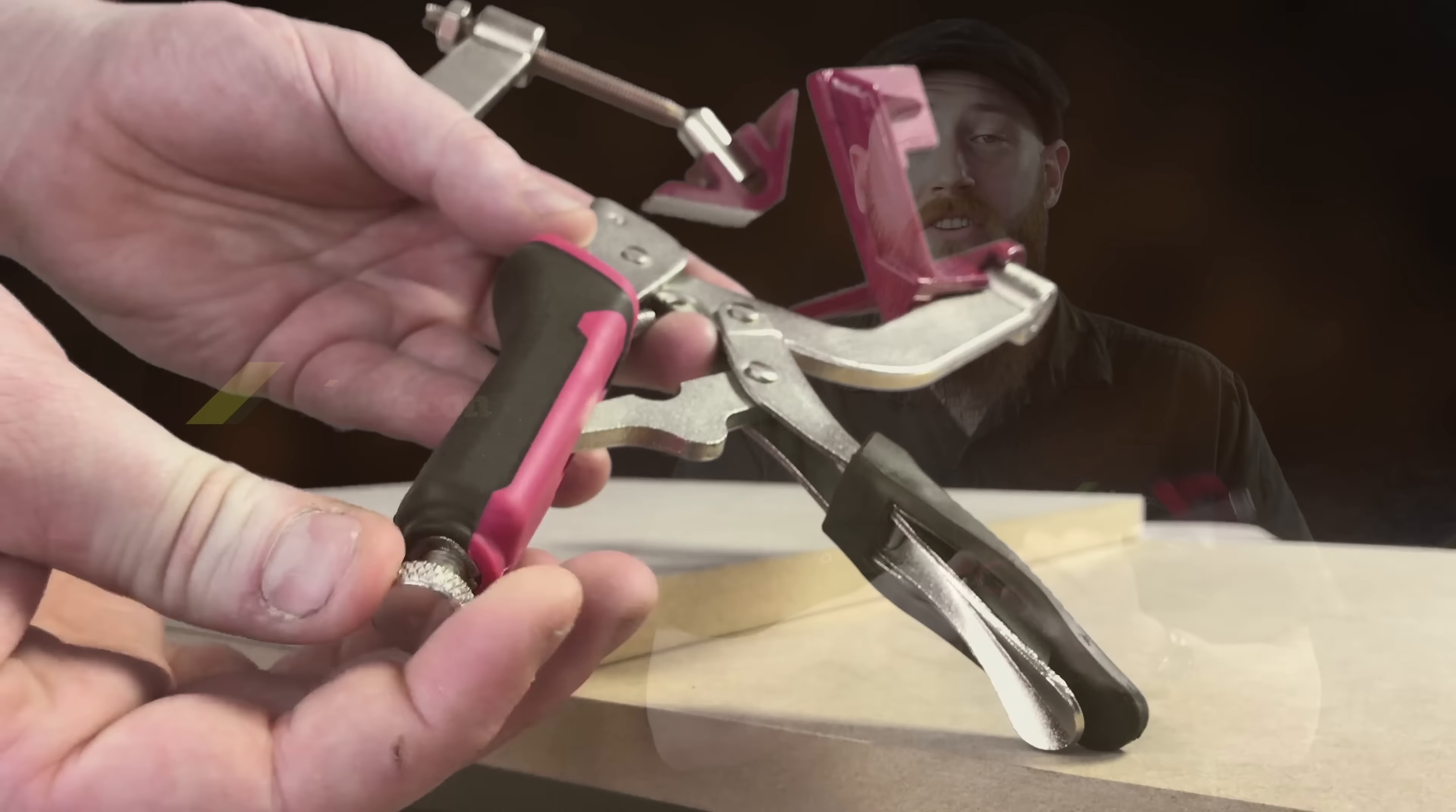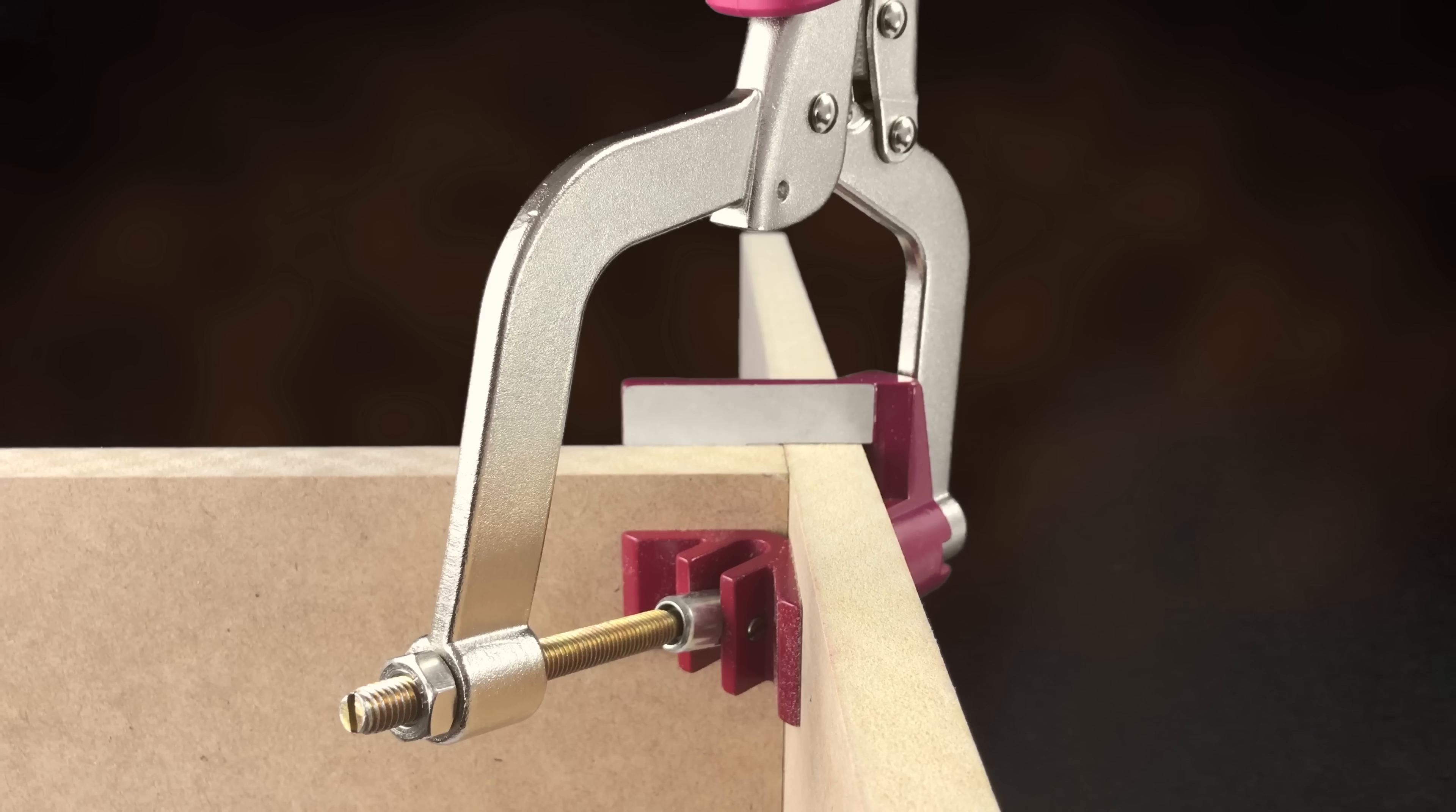What this is for is holding a board at a 90 degree angle to another board. So say you're setting in a shelf into a cabinet unit, you might be assembling a box using some pocket hole joinery, but this will allow you to hold it in exactly the right spot and it won't budge while you're driving those screws in to make sure everything holds in the right spot.